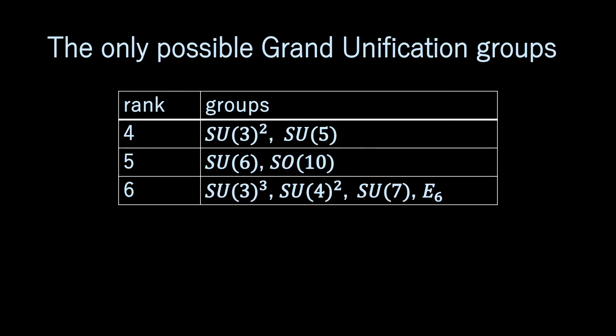The only possible grand unification groups of rank less than or equal to 6 are SU(3)², SU(5) for rank 4, SU(6), SO(10) for rank 5, and SU(3)³, SU(4)², SU(7), and E6 for rank 6.